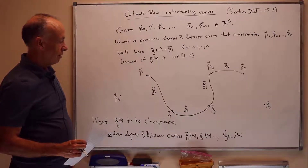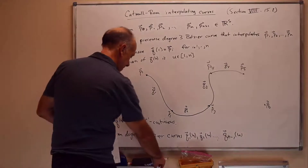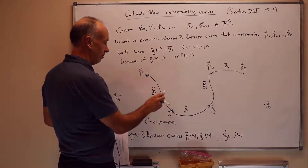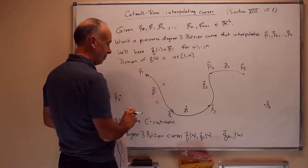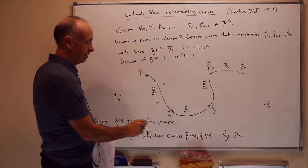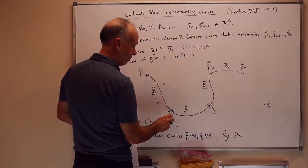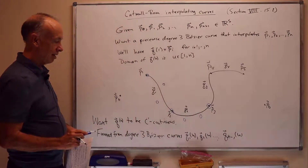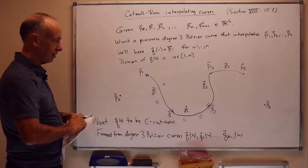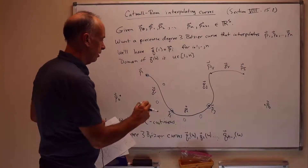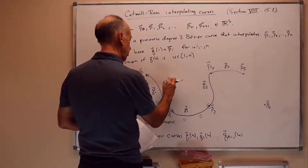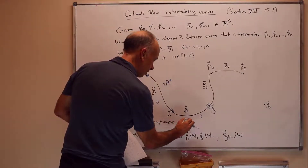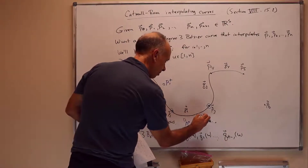We'd like to describe the control points of the constituent degree-3 Bézier curves Q1 through Q(n−1). On Q1, the first control point is P1 and the last control point is P2, with two other control points off to the sides defining Q1. Similarly, for Q2 the first control point is P2 and the last is P3, with two other control points defining Q2. We'll give these intermediate control points names: P1+ because it comes after P1, P2− because it comes before P2, then P2+, P3−, and so forth.